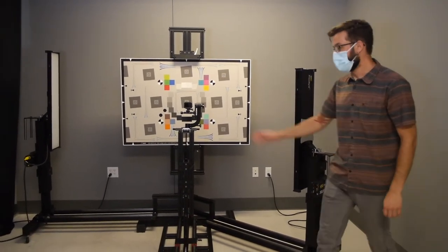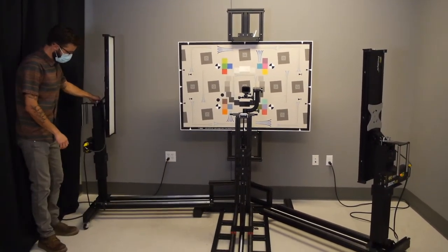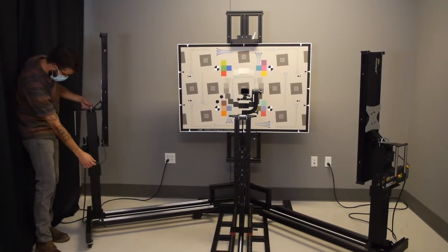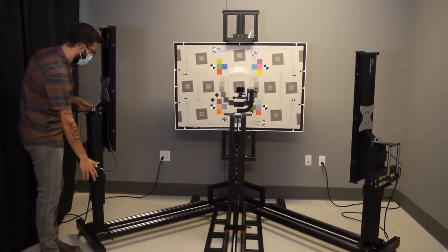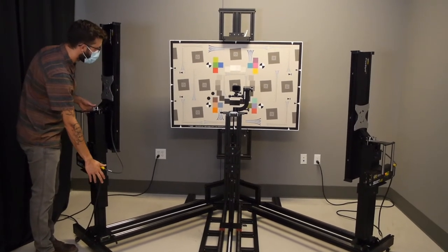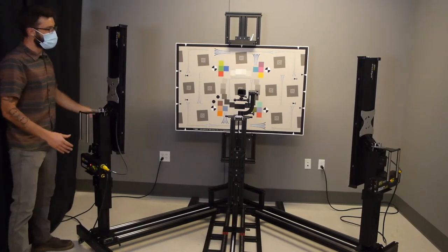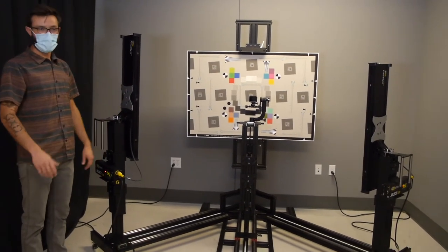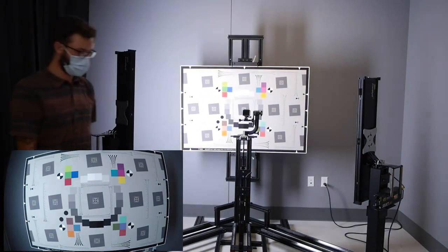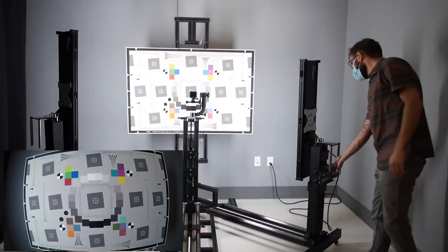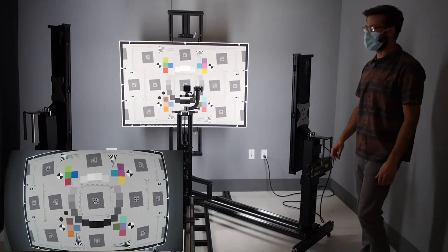45 degrees good place to start we'll leave that light there move on to the second one. We'll slide this out mindful of the cables. Same thing until we're at the 45 degree mark that looks pretty good. So now that both of the lights are at the 45 degree mark it's a good time to turn the lights on we can start checking our uniformity.